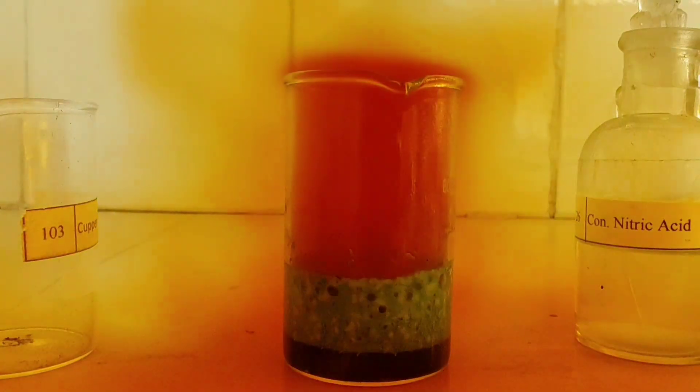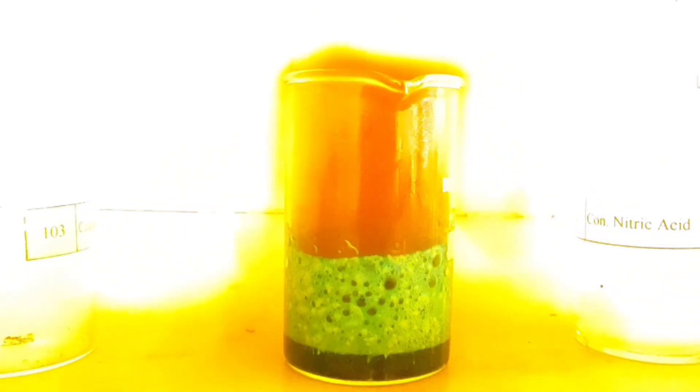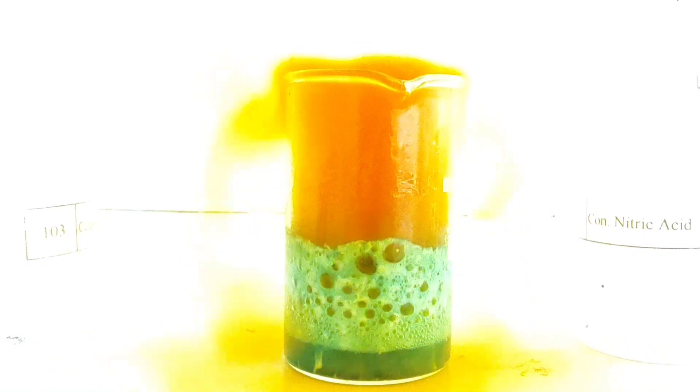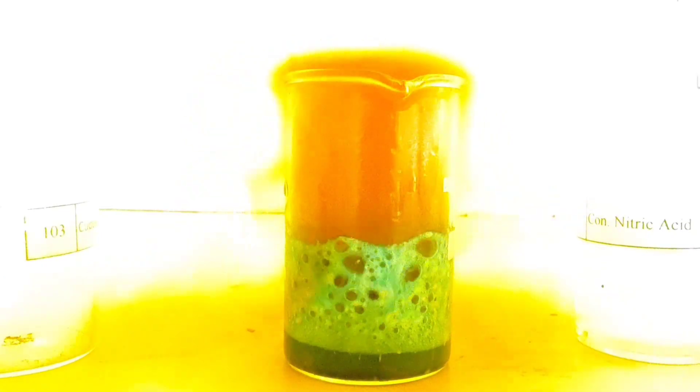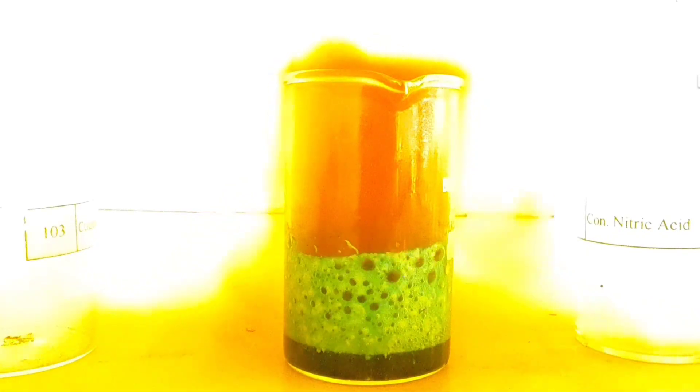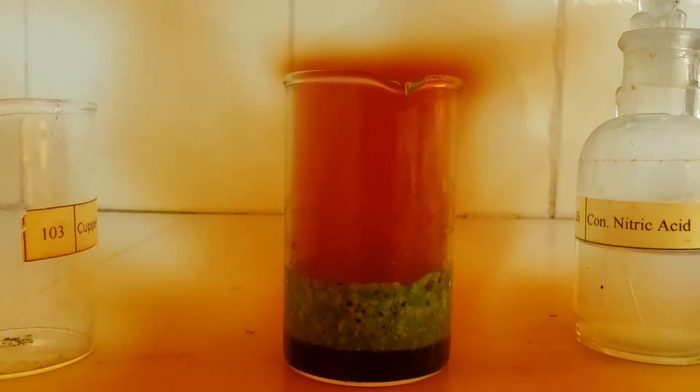In the reaction between copper and nitric acid, nitric oxide gas is produced, which is a brown vapor poison gas. Nitric acid is a very strong oxidizing agent, and the copper is oxidized to copper ions. The solution turns from colorless to red, and a cloud of red toxic gas evolves as the copper is consumed in the reaction.